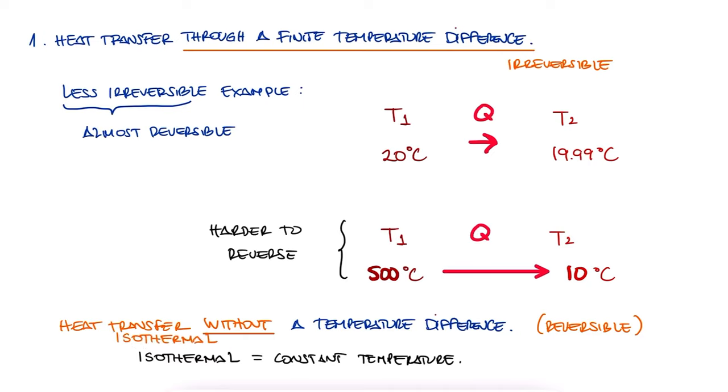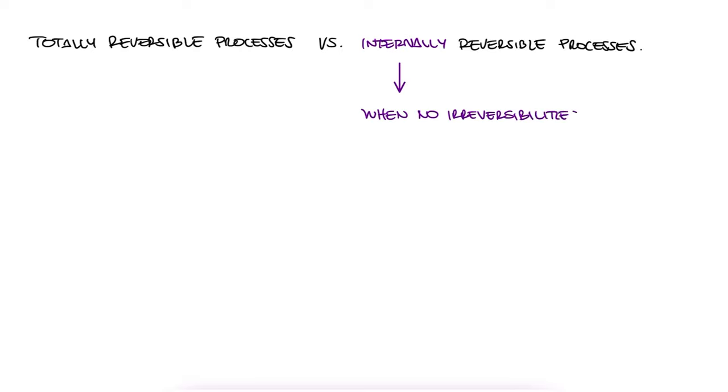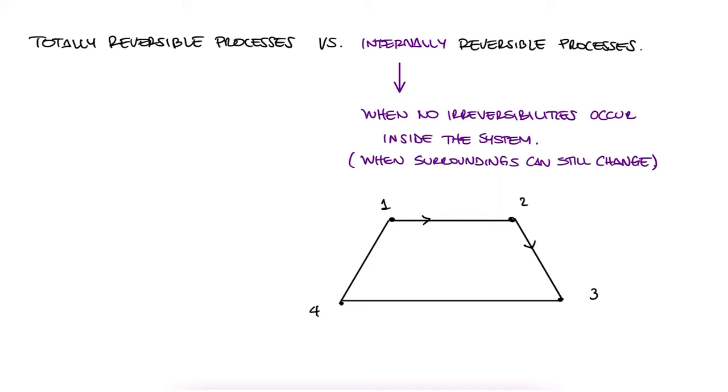Additionally, we can also make a distinction between totally reversible processes and internally reversible processes. We call a process internally reversible when no irreversibilities occur inside its boundaries. We can have a system that passes through the same states in one direction that it passes through in the reverse direction.